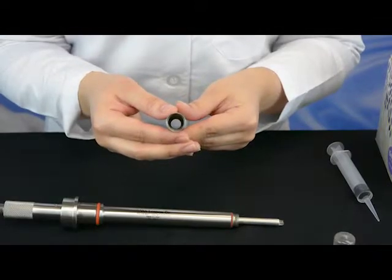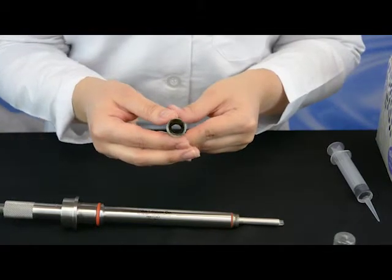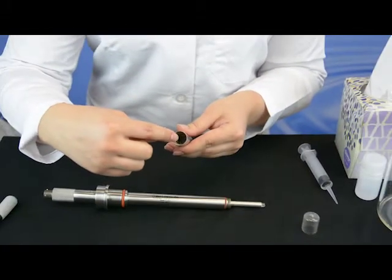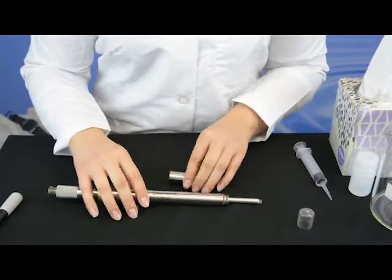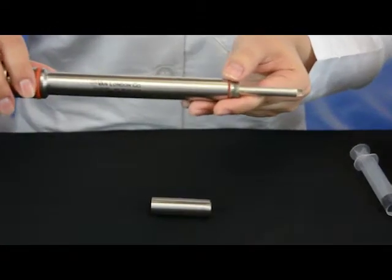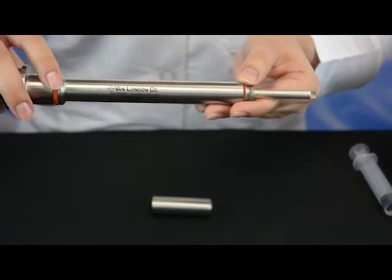After the membrane cartridge is removed from the cap, inspect all of the O-rings. One O-ring is located inside the cap and the second O-ring is located above the threads of the body where the cap meets the body. If any O-ring appears to be damaged, replace it with the spare O-ring provided.